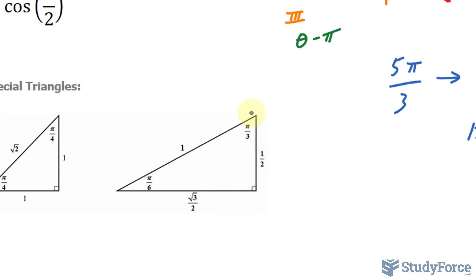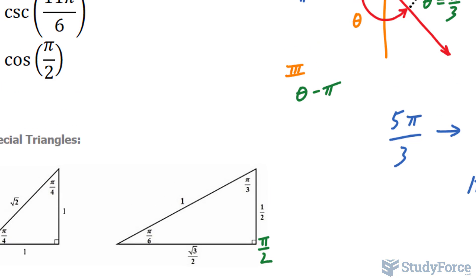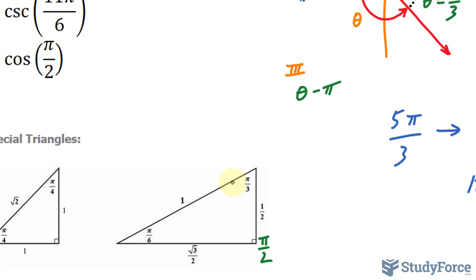That is an angle that you find in your special triangles. This special triangle, called the π over 3, π over 6, and π over 2 triangle, will help us to determine the ratio. π over 3 is found at this vertex of this triangle.